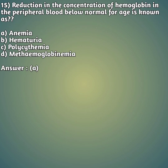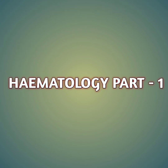Fifteenth question: reduction in the concentration of hemoglobin in the peripheral blood below normal for age is known as — option A: anemia, option B: hematuria, option C: polycythemia, option D: methemoglobinemia. The right answer is option A — anemia. When hemoglobin volume is less than normal, that condition is termed anemia.